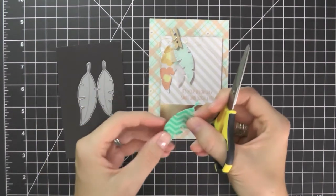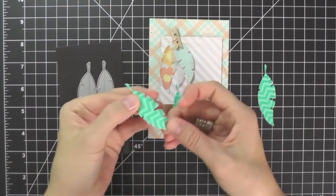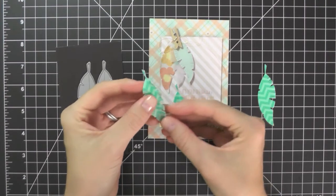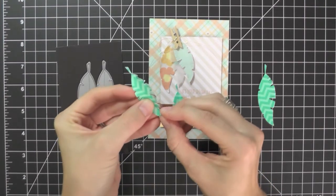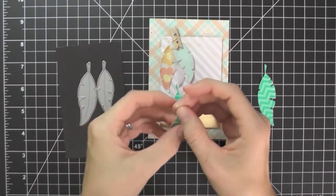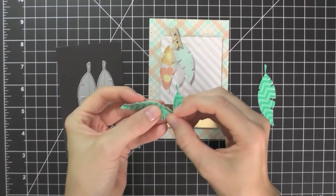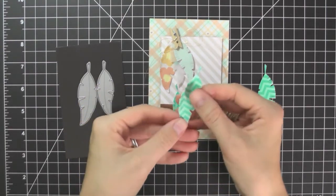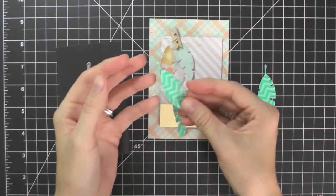Now after you've done this all the way around the entire feather, you're going to get something like this. And all you want to do is run your finger on the edges, and this is going to fluff them up just a bit. Now that's easy, and it adds so much more detail and dimension to our feather.